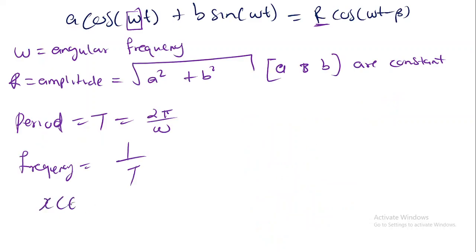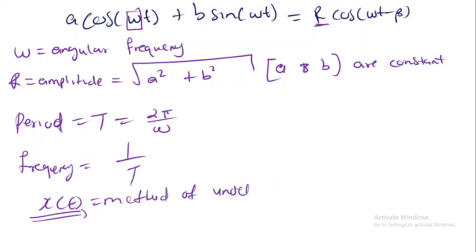To calculate x(t), remember we are dealing with a mass-spring system. The mass-spring system is the application of the method of undetermined coefficients. So we are going to calculate x(t) using the method of undetermined coefficients.